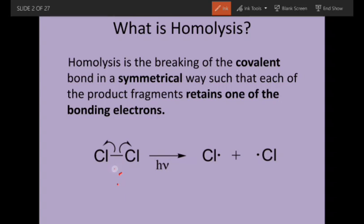Both the electrons go to the two atoms in a symmetrical pattern, such that each product fragment retains one of the bonding electrons. One electron is with this chlorine and the other electron is with this chlorine. So, the bond breaking is in a symmetrical way — homolysis is the breaking of the covalent bond in a symmetrical way such that each of the product fragments retains one of the bonding electrons.